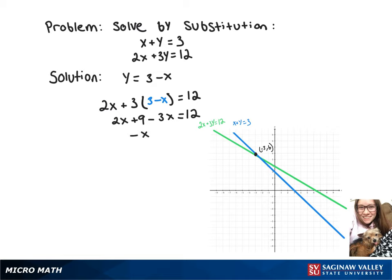And combining our like terms and subtracting the 9 over gives us negative x equals 3. And then dividing by negative 1, we'll get x equals negative 3.